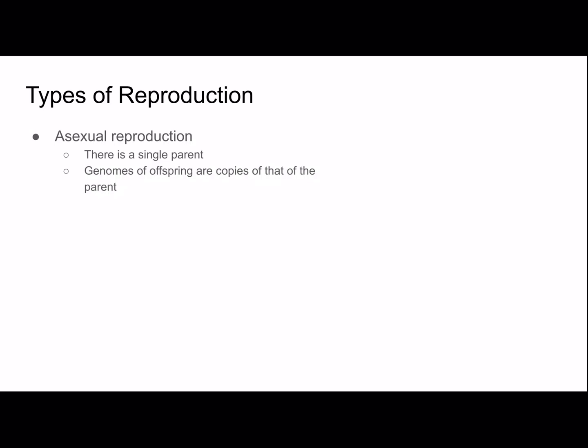Asexual reproduction is where there is a single parent, and the genomes of offspring are copies of that of the parent. Because of this, the offspring is called a clone of the parent. Any genetic variation is caused by mutations. An example of an organism that performs asexual reproduction is a hydra, a small freshwater organism with some pretty neat characteristics and abilities.